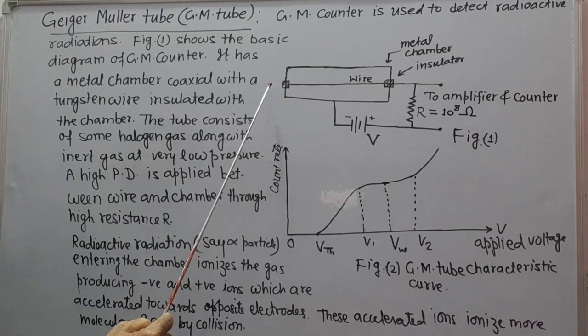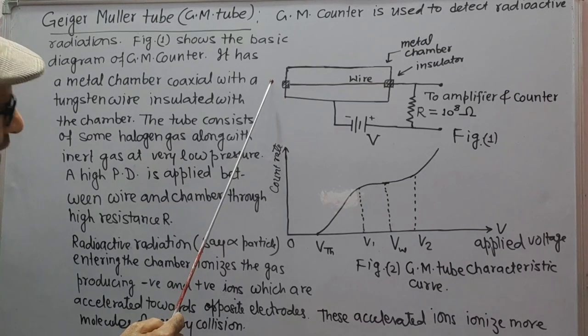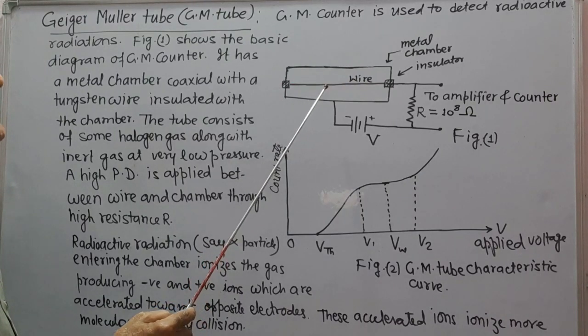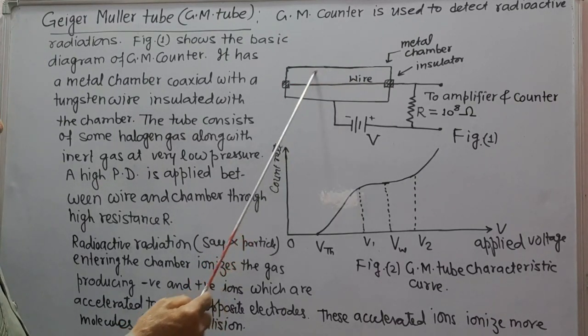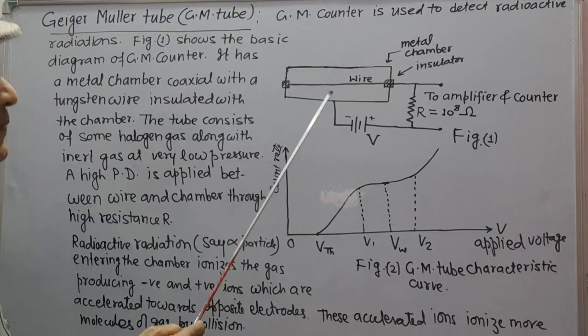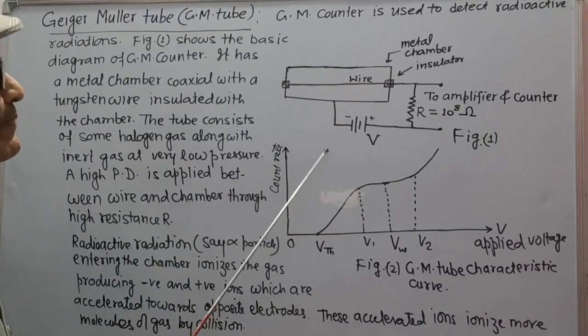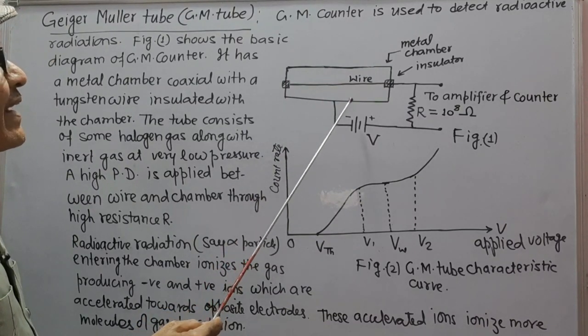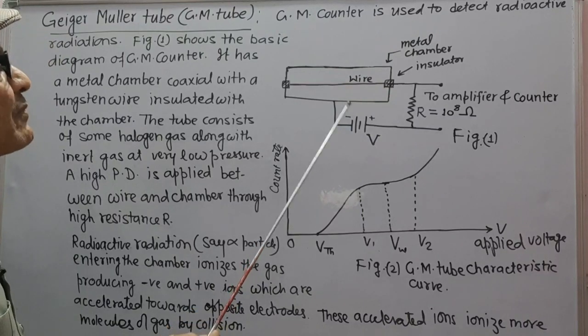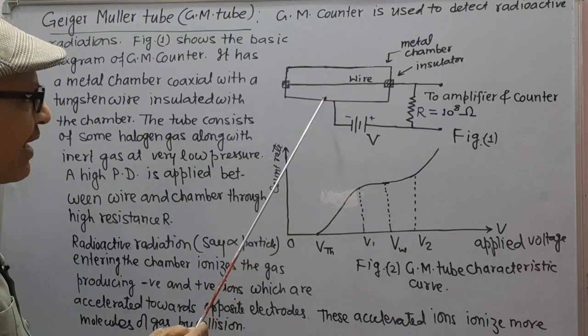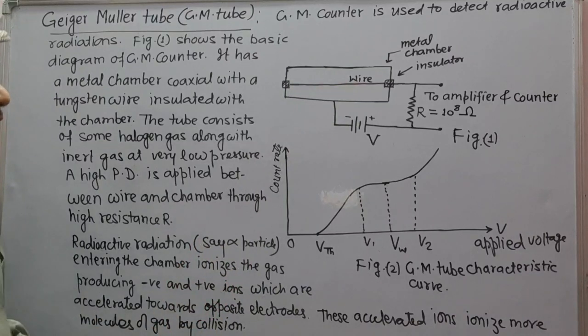Some inert gas along with halogen gas is filled at very low pressure in the chamber. When radioactive radiations, say alpha particles, enter the chamber, it ionizes the gases inside the chamber producing negative and positive ions. These ions are accelerated towards opposite electrodes and in their path they also ionize other molecules of gas by collision.